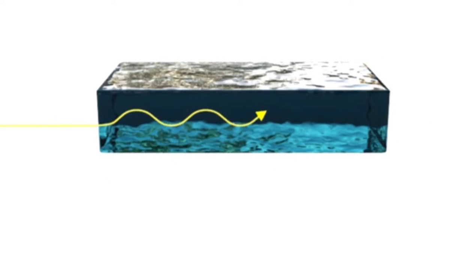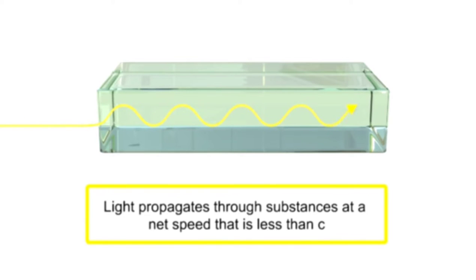When light encounters a medium such as air, water, or glass, it propagates through the substance at a net speed that is less than C.